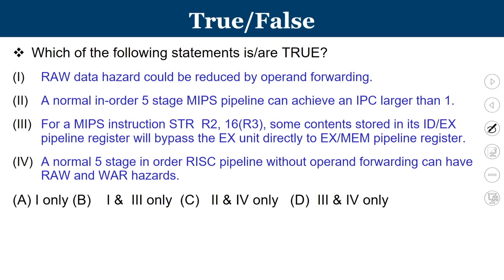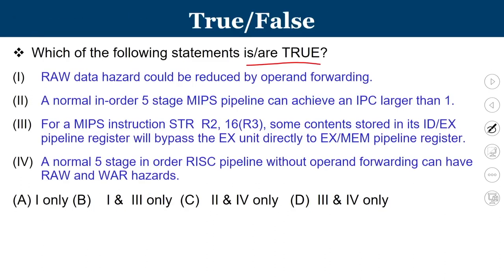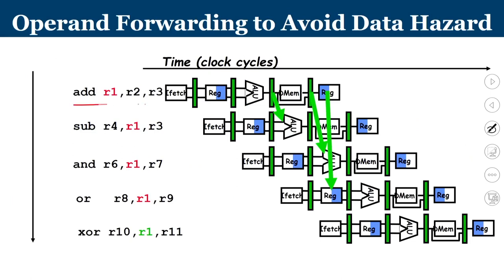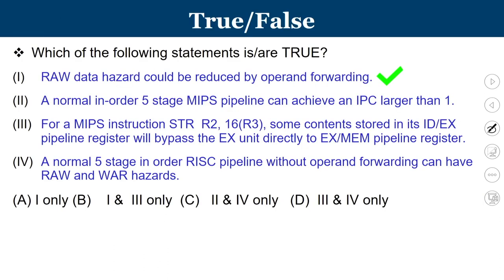For Statement 1, RAW data hazard could be reduced by operand forwarding. We have RAW data hazards where the first instruction produces a result on R1 which is required in subsequent instructions. With operand forwarding — from the output of ALU to the input of ALU, and from output of MEM stage to input of ALU — we can complete instructions in their assigned time slots with no stalls. Therefore, Statement 1 is true.